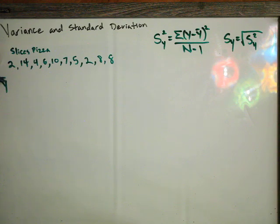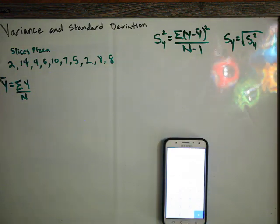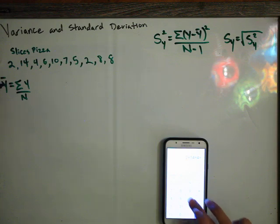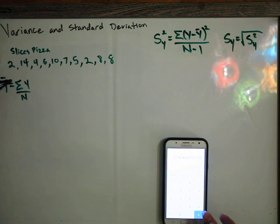Y bar, which is the mean, is the sum of all y's divided by the total number of people. In this case, that's 2 plus 14 plus 4 plus 6 plus 10 plus 7 plus 5 plus 2 plus 8 plus 8.